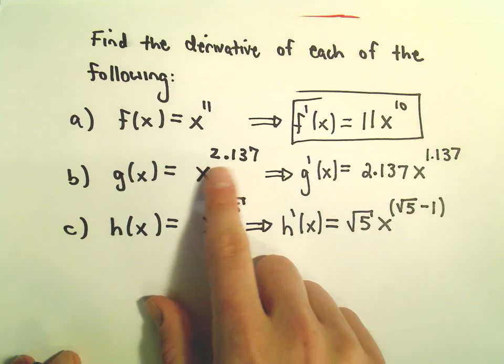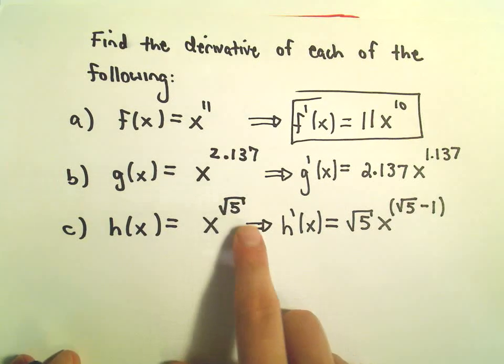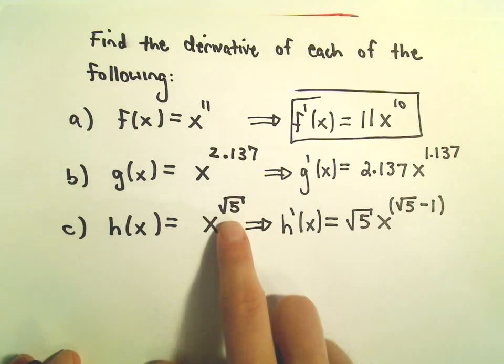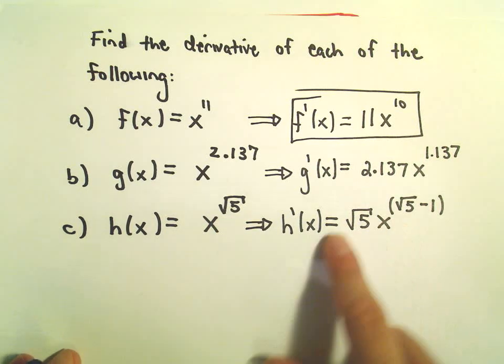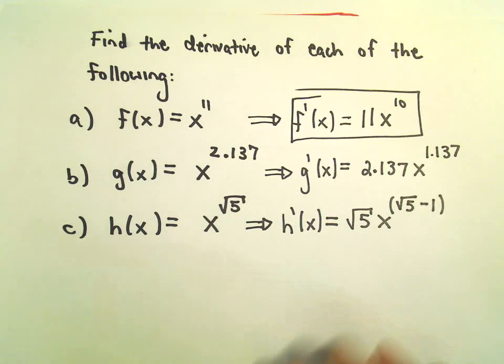So sometimes people get thrown off by the not whole number exponents. But again, it's still the same type of function. You still just have a variable to a number. So this power rule still applies just like before.